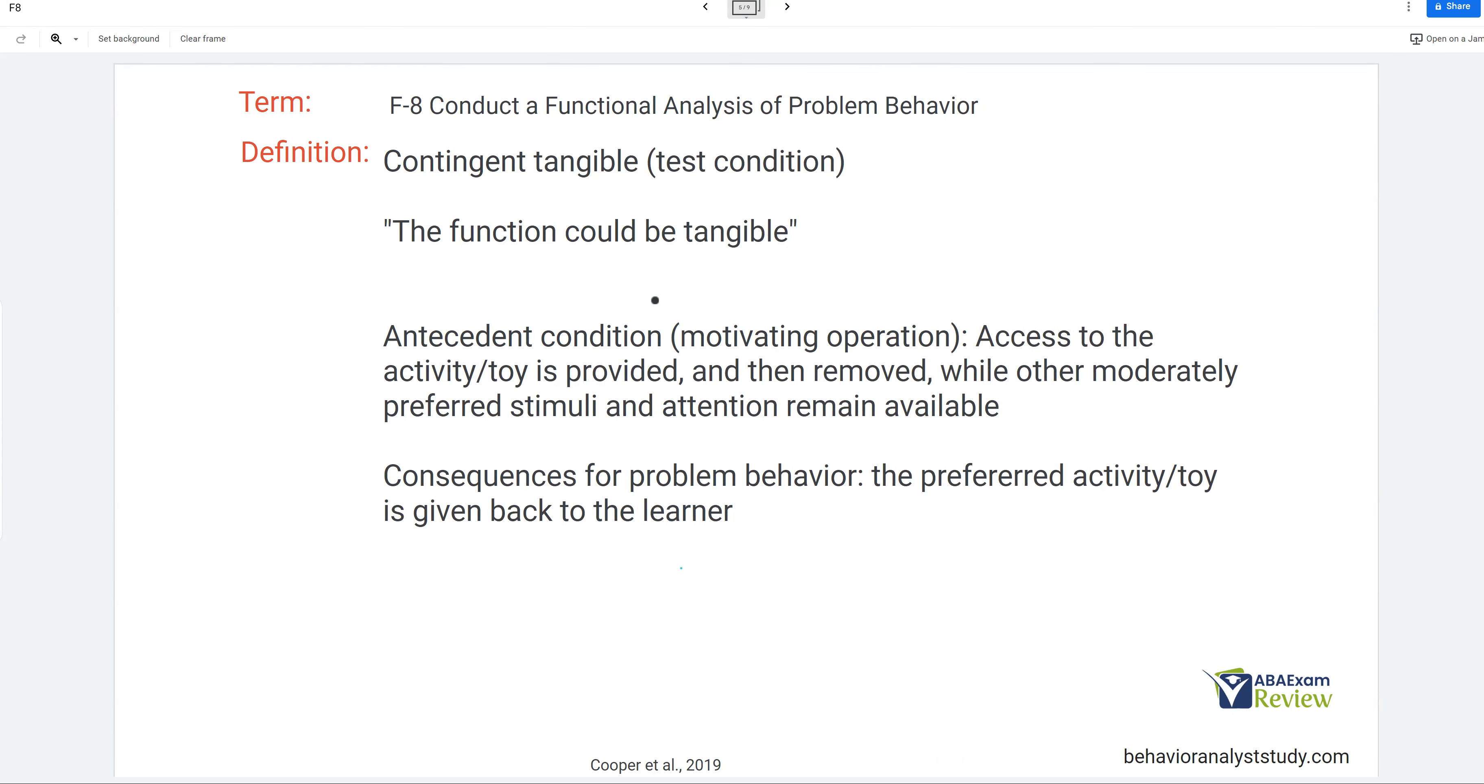Tangible. So we, as you might predict, give access to activities or toys, and then remove access. Think about when you give access to an iPad, and then remove the iPad. The motivation goes up to get that iPad back. Interestingly, moderately preferred stimuli and attention remain available. Because we're trying to test for this individual activity or toy, which is something you don't want to overlook. And then the consequence, if problem behavior occurs after removal, well, of course, we're going to give back the activity or the toy. You can see how, if you know your functions, and you understand why behavior happens in the future, and how consequences affect behavior, that all this is very straightforward. If the behavior is happening to obtain a tangible, to increase the motivation for tangible, we have to remove that tangible, and then we're going to give the tangible back once the behavior begins.